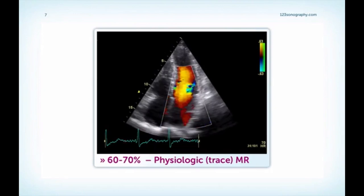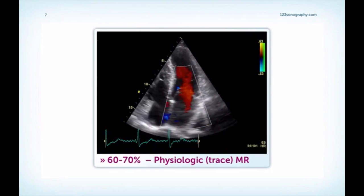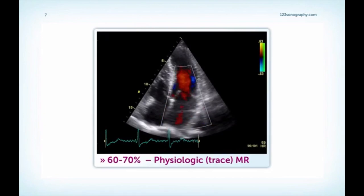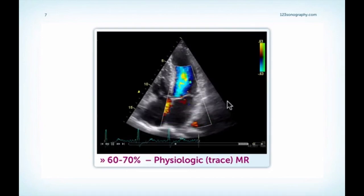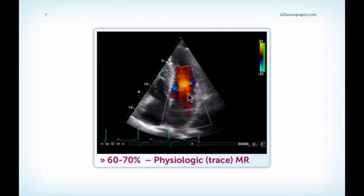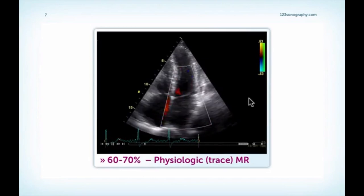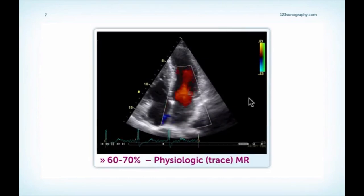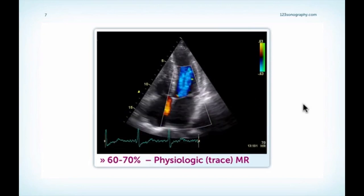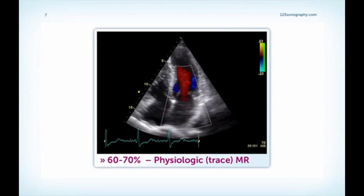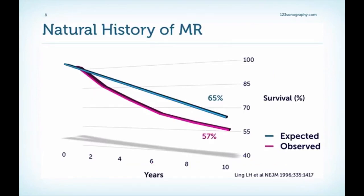MR is a frequent finding. You will find physiologic or trace MR in very many patients, and the incidence probably increases with age. This is such an example where you see just a very small jet here in proximity to the mitral valve. The detection rate also depends on your machine and also your abilities to display such small jets. Such small degrees of mitral regurgitation don't have any impact on survival or prognosis. However, if you have moderate or severe mitral regurgitation, then the picture looks differently.